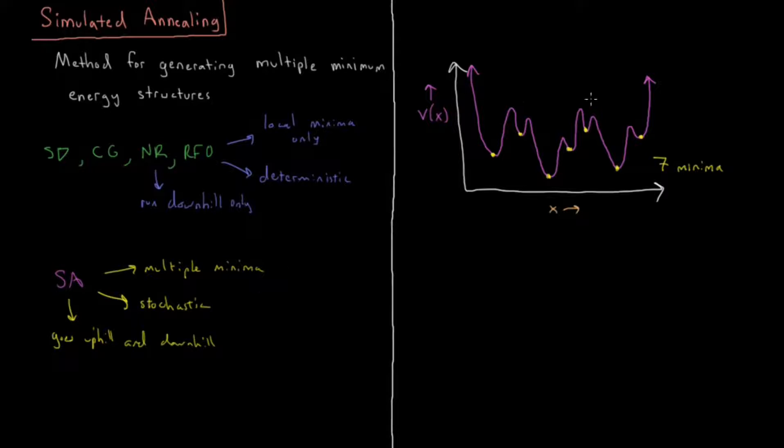And it goes uphill and downhill. So there's always a chance that it could find your global minimum, your lowest energy minimum energy structure.